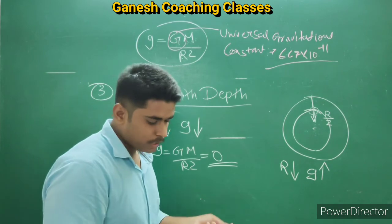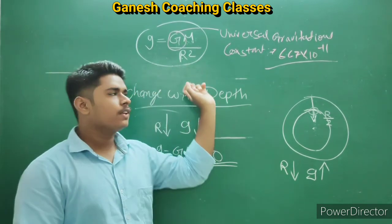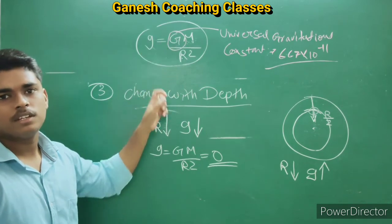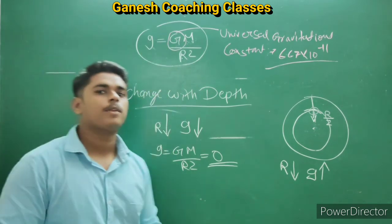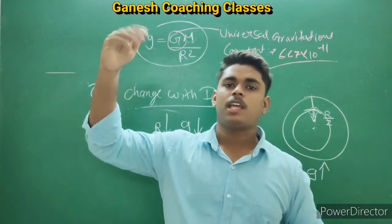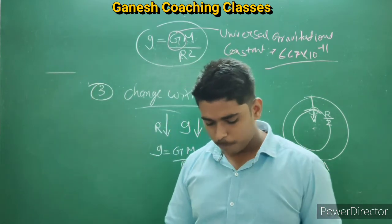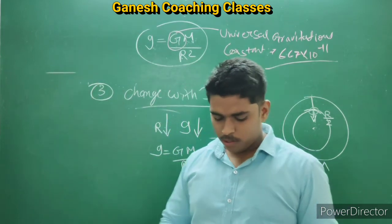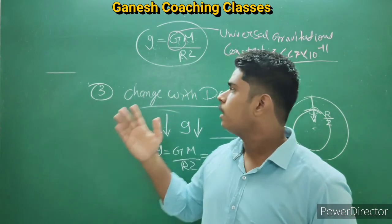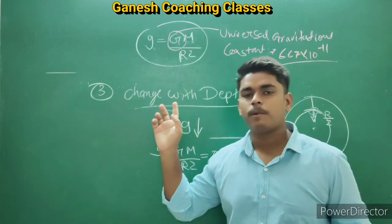So here we completed the variation in the value of g — three types: first on the surface of the Earth, second when going to height, and third when going to depth. The next topic is mass and weight, which we will cover in the next lecture. You have to revise this.